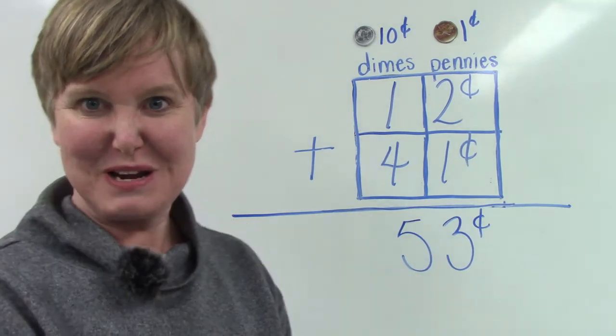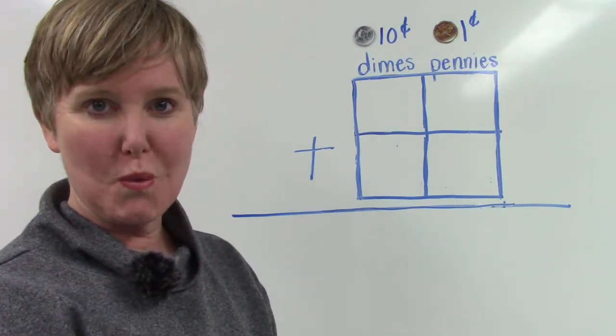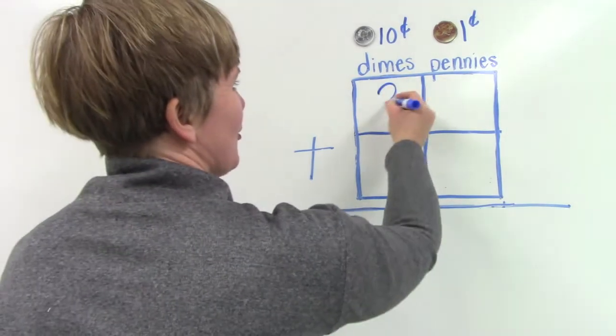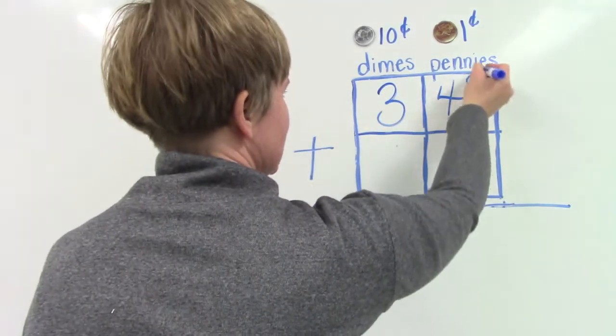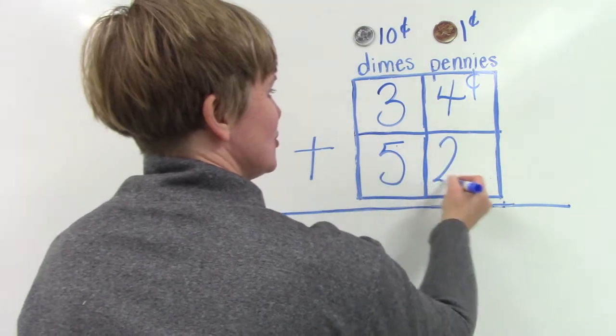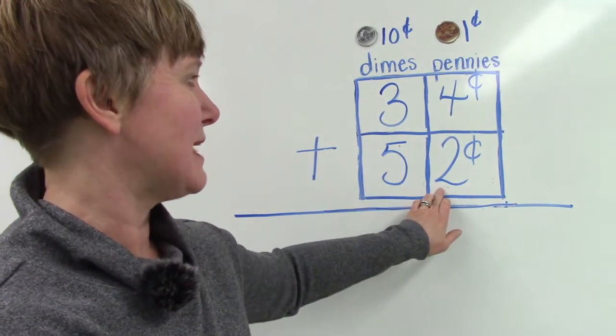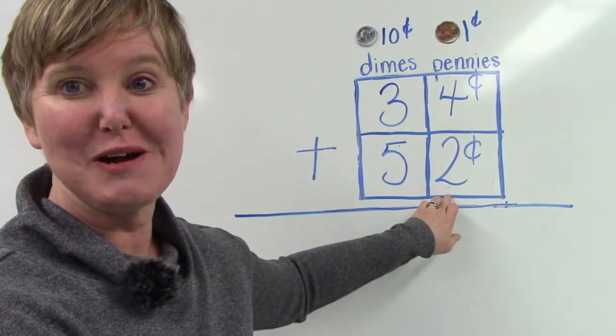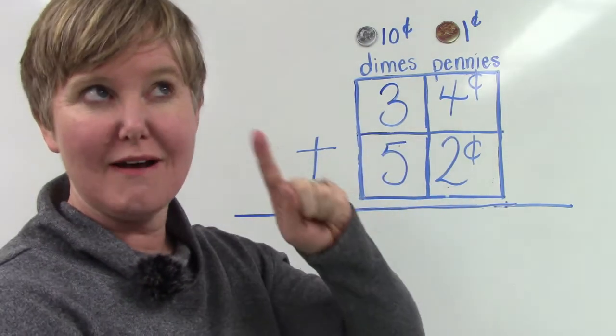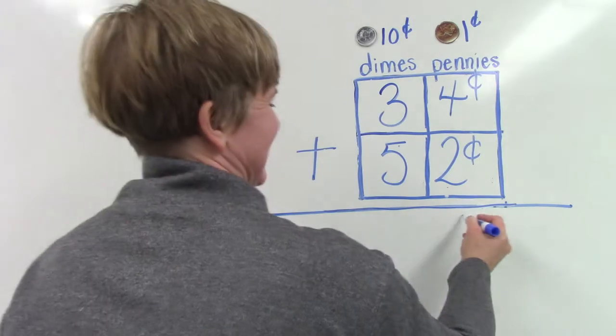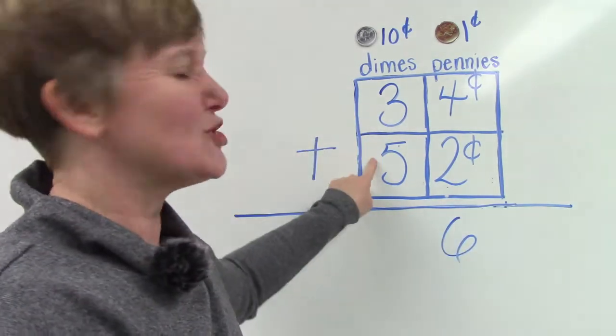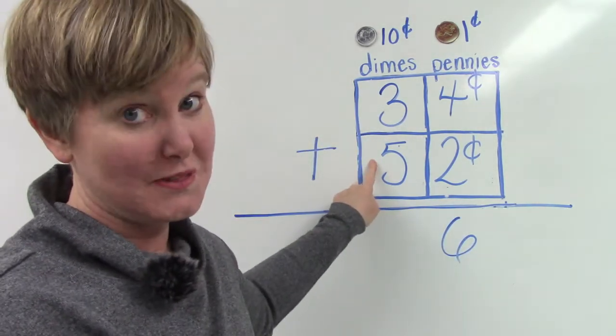Let's try another one of these. What if we were adding thirty-four cents plus fifty-two cents? Again, we start over here in our ones place and we add four plus two. Four, five, six.